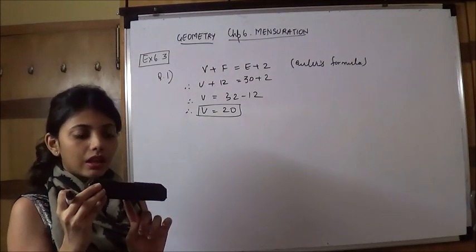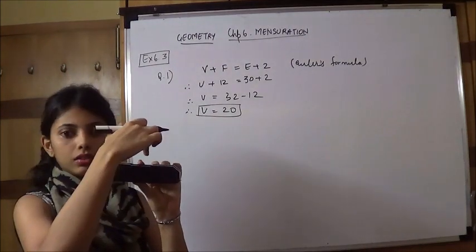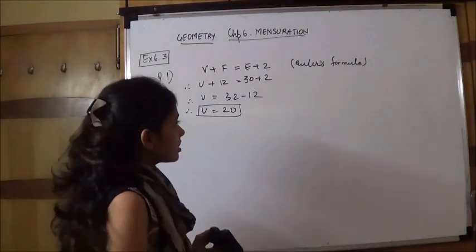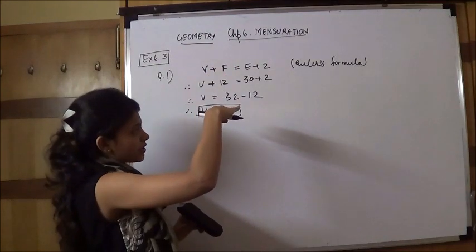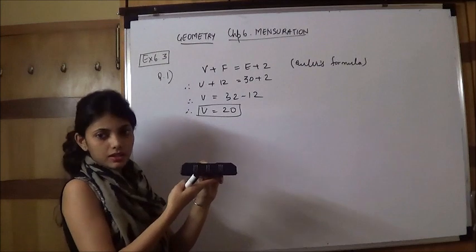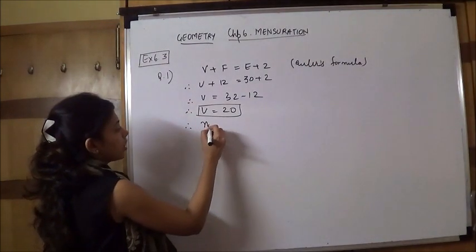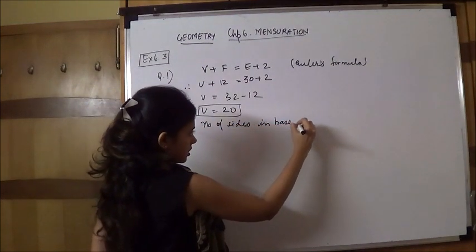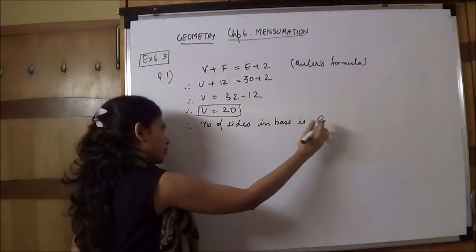Now we know what the number of vertices is: 20. 10 vertices are up and 10 vertices are down. So up also 10 sides and down also 10 sides. So how many sides will be? 20 sides. Therefore, number of sides in base is 10. 20 divided by 2.